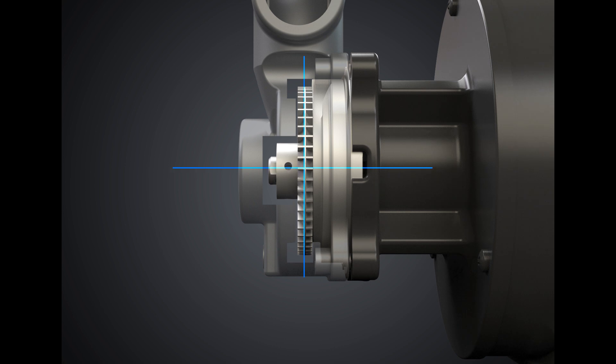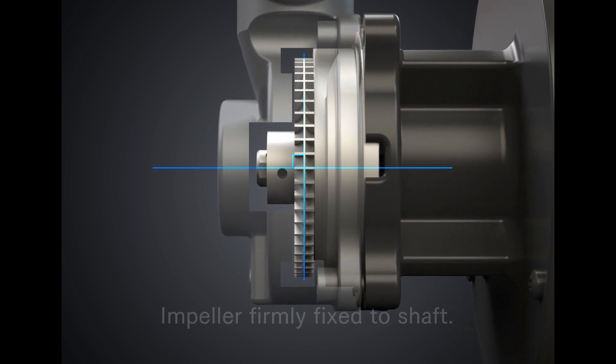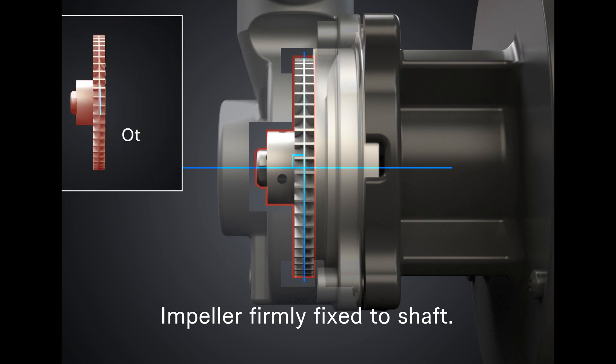As with Nikuni's other precision turbine pumps, the G-Series impeller is firmly fixed to its shaft. Perpendicularity, parallelism, and concentricity are preserved.